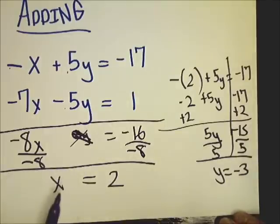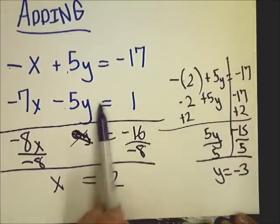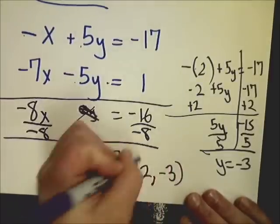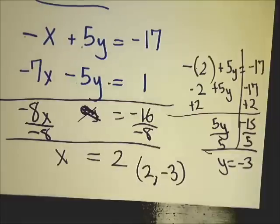To eliminate minus 2, I need to add 2, so this becomes negative 15 equals 5y. Divide by 5 on both sides and you get y is equal to negative 3. All I did was eliminate using adding, plug it back into one of them. Your final answer is 2, negative 3. That's how you need to form your answer for systems of equations.